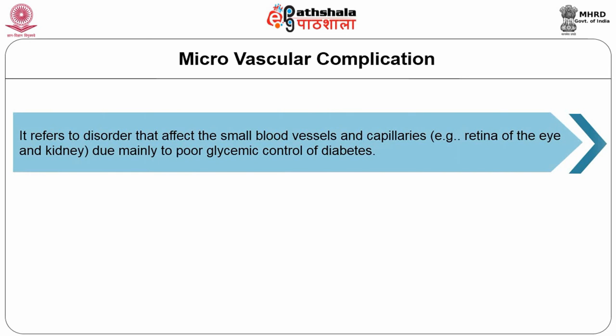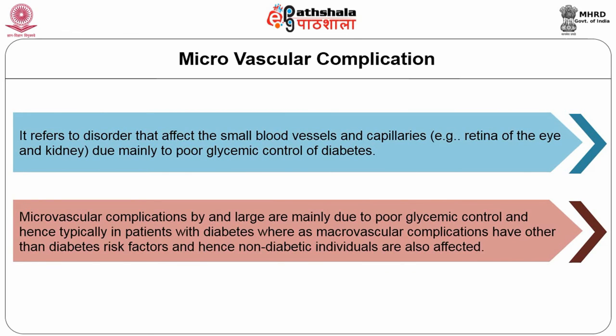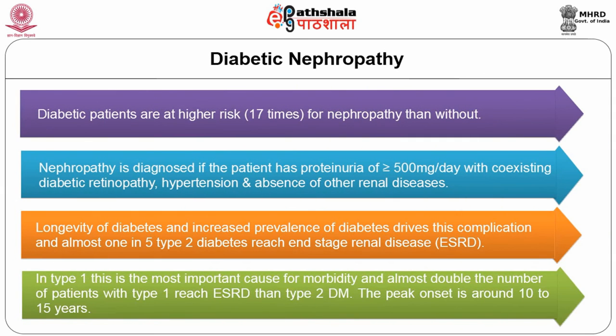Microvascular complications affect small blood vessels and capillaries — the retina of the eye and the very fine vessels supplying the kidneys. Microvascular complications are largely due to poor glycemic control of diabetes and hence are typically seen in diabetic patients, whereas macrovascular complications can also affect non-diabetic people.